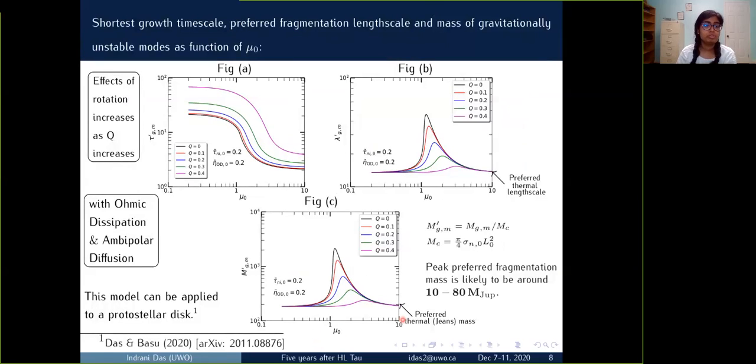Based on this simulation results and the previous works of Basu et al., we took some typical numbers for the neutral ion collision time and the ohmic diffusivity corresponding to the number density 10^11 per centimeter cubed. So this is the model which incorporates both the non-ideal MHD effects ohmic and ambipolar together with rotation and this model can be applied to the protostellar disk.